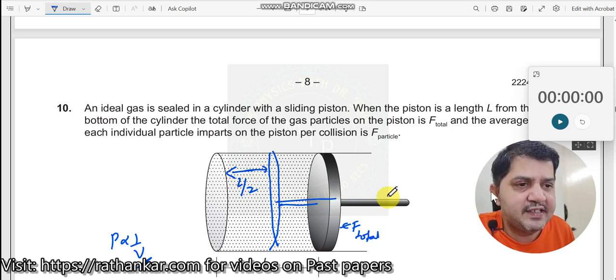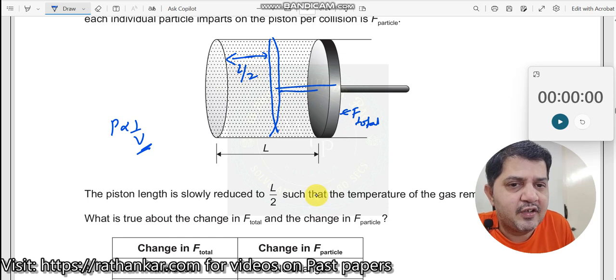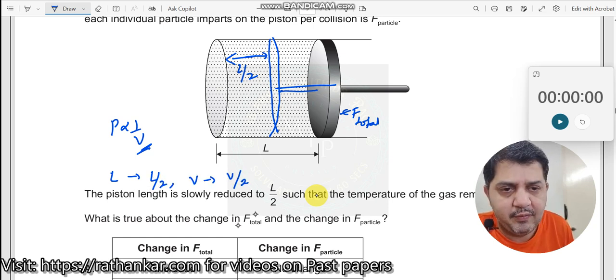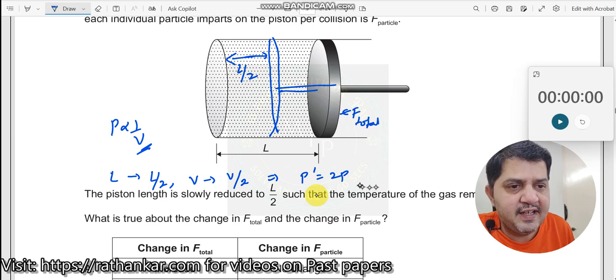When pressure increases, when length becomes L by 2, volume also reduces to V by 2. And as a result, the new pressure will become 2 times P. When pressure increases, what happens to force?